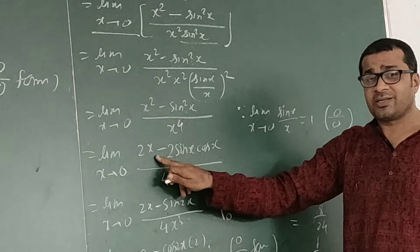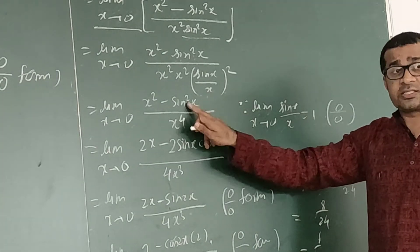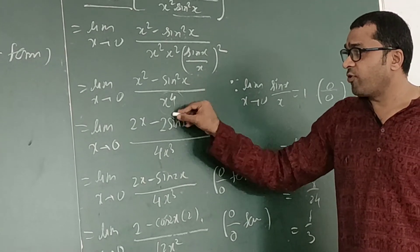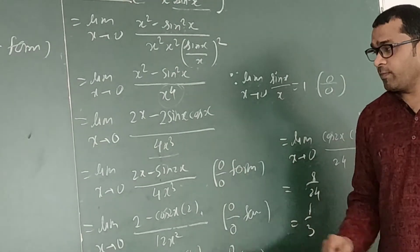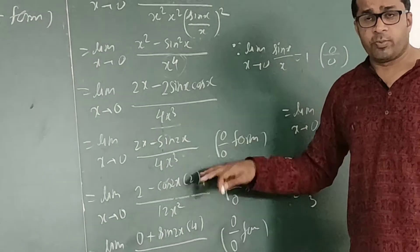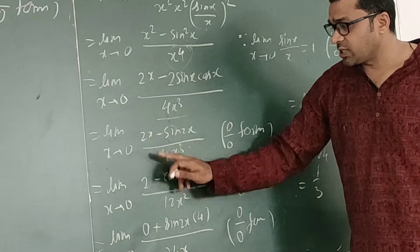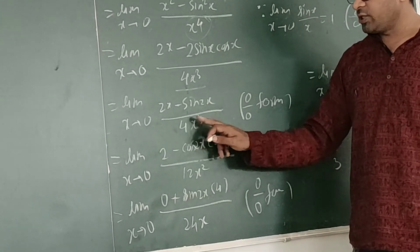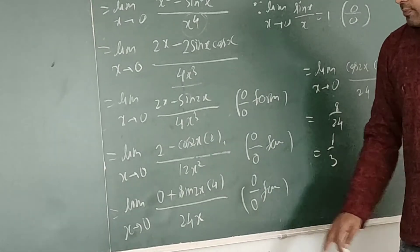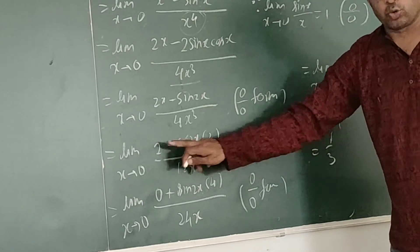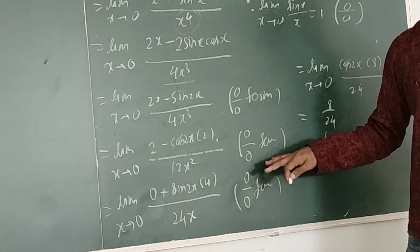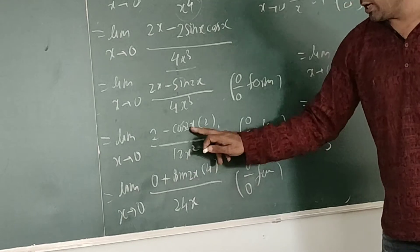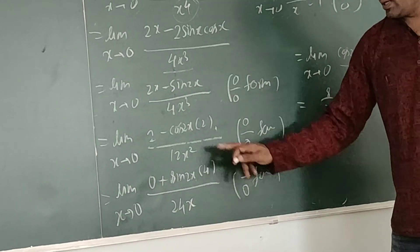Applying L'Hôpital's rule: derivative of x² is 2x, derivative of sin²x is 2 sin x cos x = sin 2x, denominator 4x³. Putting x = 0 gives 0/0 form again. Apply L'Hôpital again: derivative of 2x is 2, derivative of sin 2x gives cos 2x · 2, denominator becomes 12x². Putting x = 0: 2 − 2 = 0, still 0/0 form.